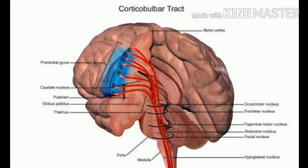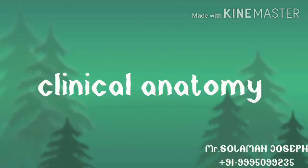The corticospinal and corticonuclear fibers: the corticonuclear fibers from the cranial nerve nuclei to the head and neck pass through the genu of the internal capsule. The corticospinal fibers form several discrete bundles in the posterior limb and are arranged from before backwards as upper limb, trunk, and lower limb. Finally, corticothalamic fibers run from the cortex to the thalamus and form part of the thalamic radiations.